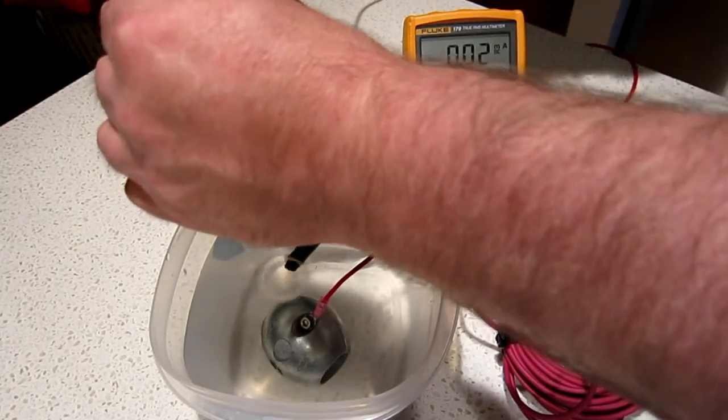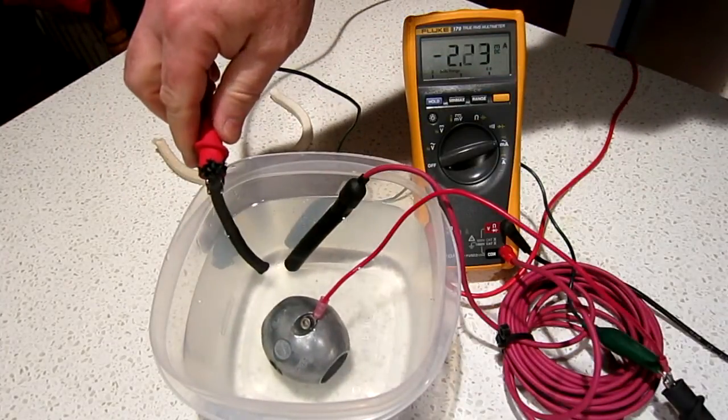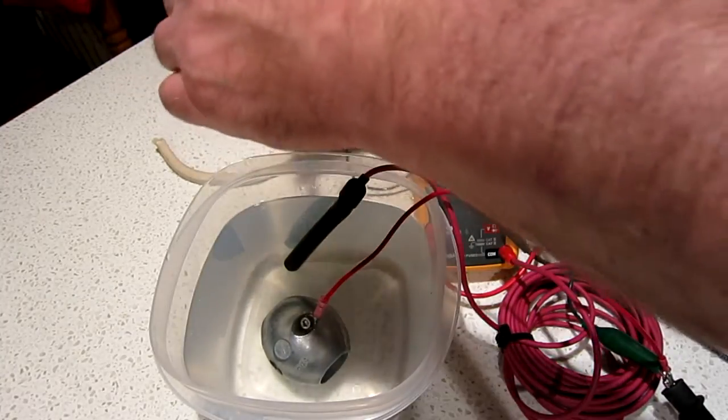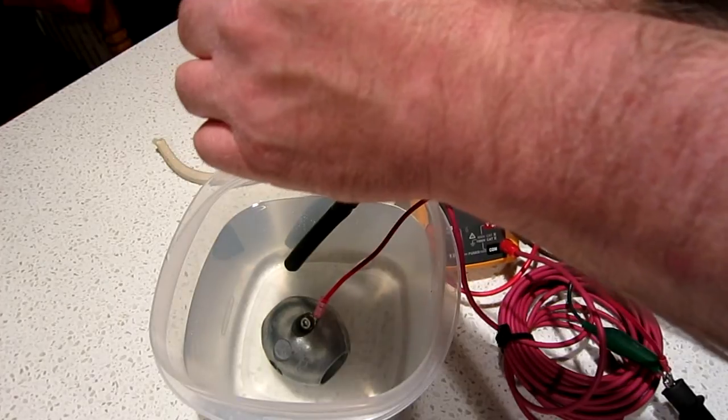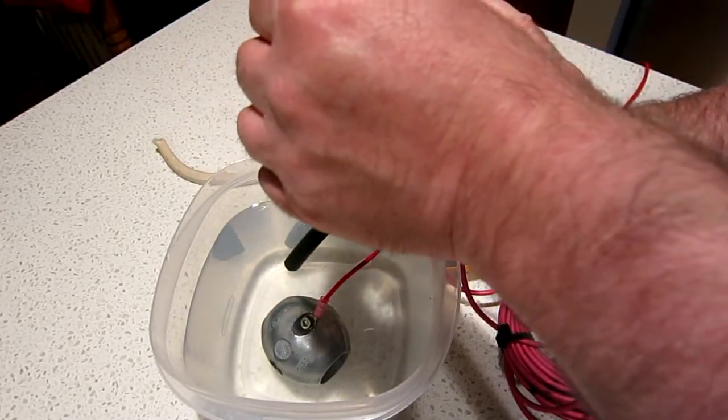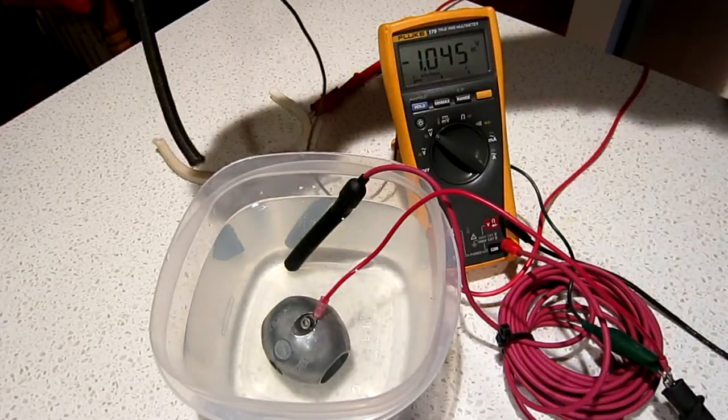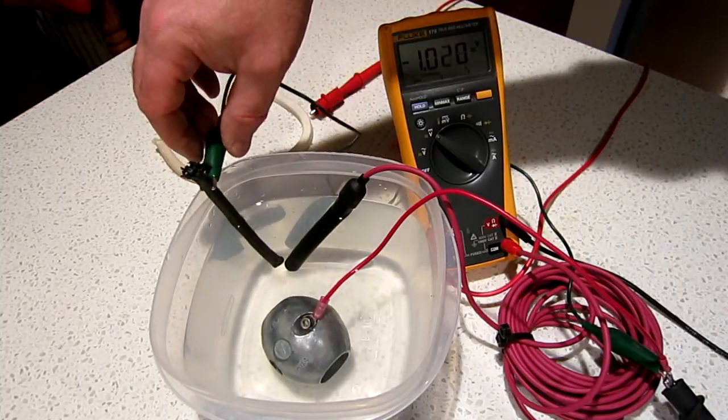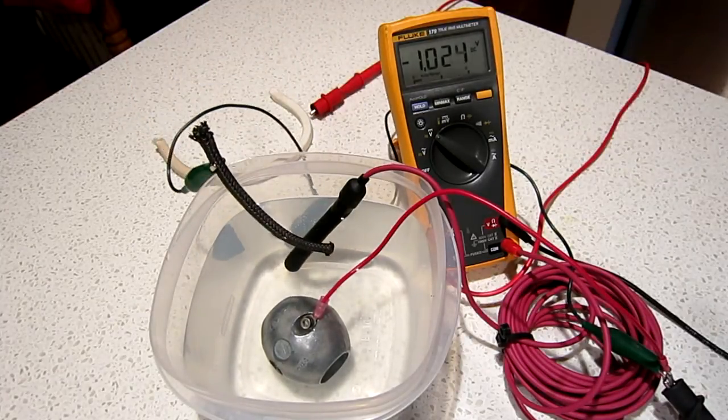I need to connect that lead in order to see that. There we go. If I go back over to the volt scale here, there's our zinc protection. When I drop that in, you can see it drop down again. These are the changes that you'll see.